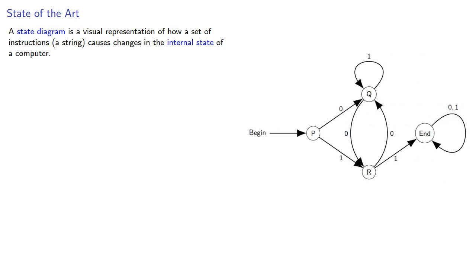A state diagram is a visual representation of how a set of instructions, a string, causes changes in the internal state of a computer, or anything else that follows the process.